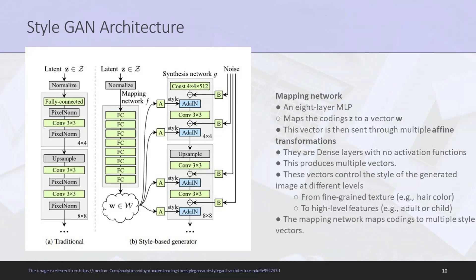This is the StyleGAN architecture. It has a mapping network and a synthesis network with noise. The mapping network is an 8-layer multi-layer perceptron. It maps the coding Z — where Z is the latent vector — to a vector W. This vector W is sent through multiple affine transformations, which are dense layers with no activation function. This produces multiple vectors that control the style of the generated image at different levels — from fine-grained texture like hair color to high-level features such as whether it is an adult or a child. The mapping network maps codings to multiple style vectors.